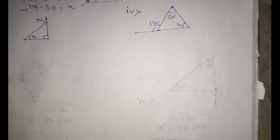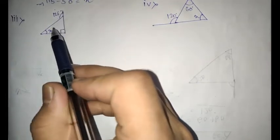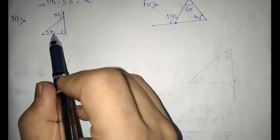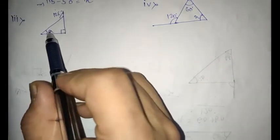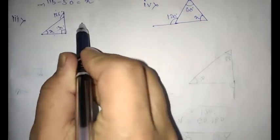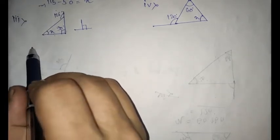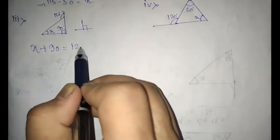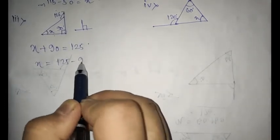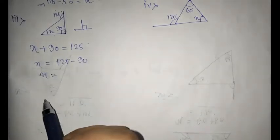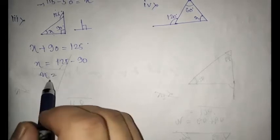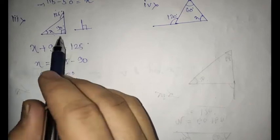Proceeding forward to question number three. You can see here that the exterior angle is given as 125, and the x value is what you have to find. You can see that two interior angles are not mentioned. We can predict that this angle should be 90 degrees — why? Because a perpendicular always makes 90 degrees, as I have already discussed in altitude. So we can write x plus 90 is equal to the exterior angle, that is 125. So x is equal to 125 minus 90, which is 35 degrees. 90 plus 35 makes 125.